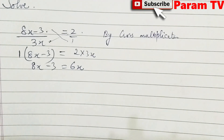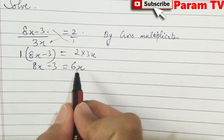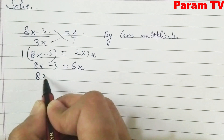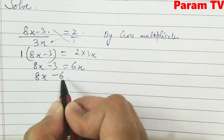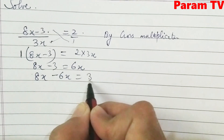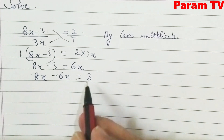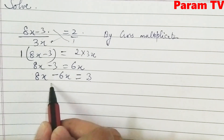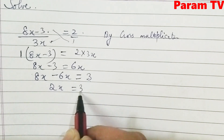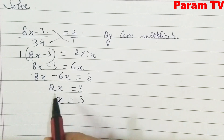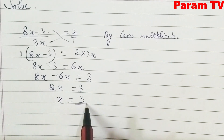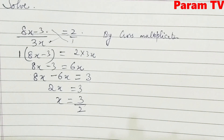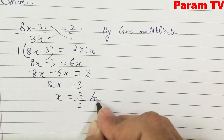Now we have a simple equation. Collect like terms and transpose. 8x − 6x = 3. So 2x = 3, therefore x = 3/2. This is the answer.